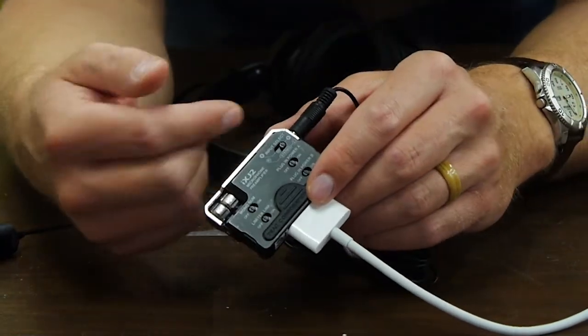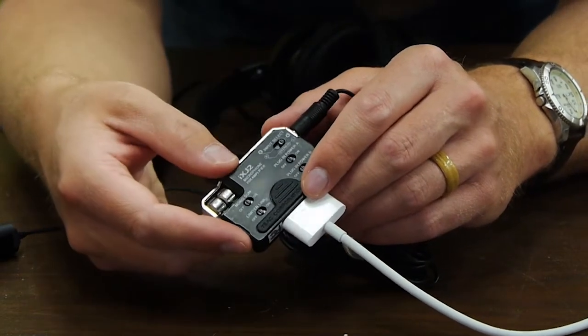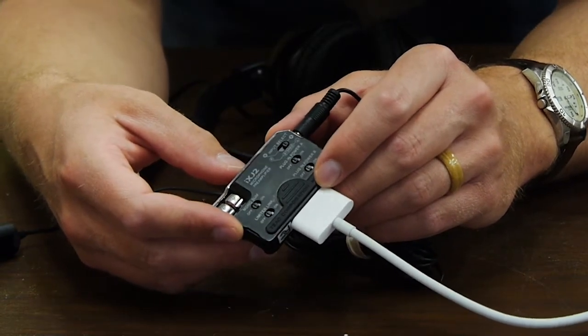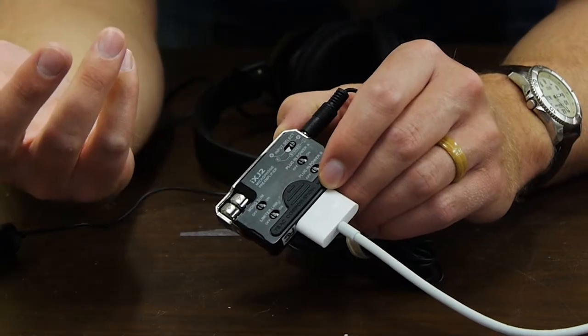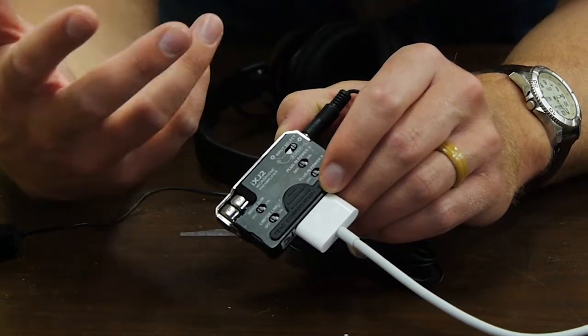So one more thing to note as we're hooking up our preamp and our microphone is that this particular preamp, this Tascam, has a few different settings that we want to double check. So as I mentioned, we have two different inputs. So if we're doing a two-person interview, that's really convenient because we can plug in two microphones. But if we're just interviewing one person, we only need one.